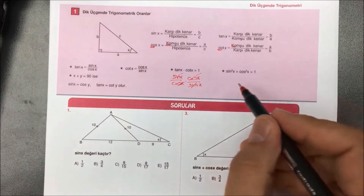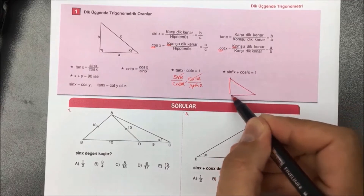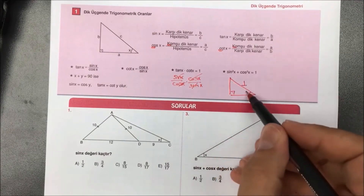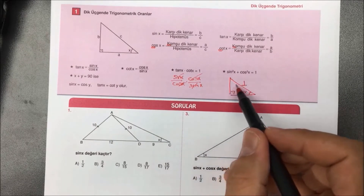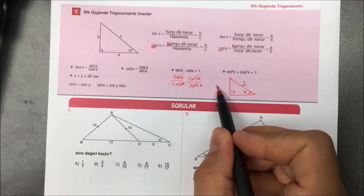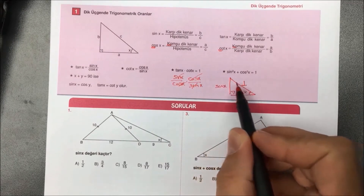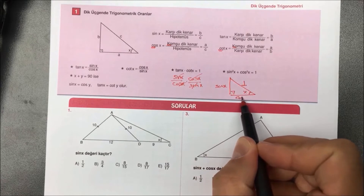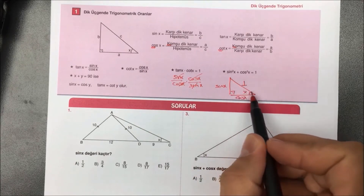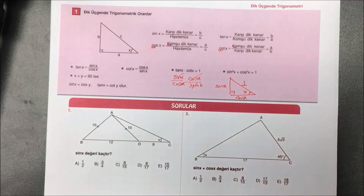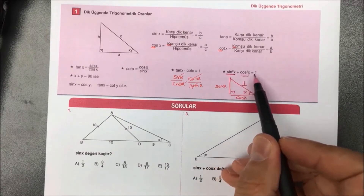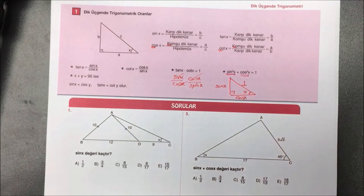Kareleri toplamları 1'e eşittir. Hipotenüsü 1 olan bir dik üçgen çizdiğinizde, karşı bölü hipotenüs sinüs olduğundan karşı kenar sin(x), komşu bölü hipotenüs kosünüs olduğundan komşu kenar cos(x) olacak. Pisagor bağıntısı yapıldığında sin²(x) + cos²(x) = 1 sonucunu bulmuş oluruz.